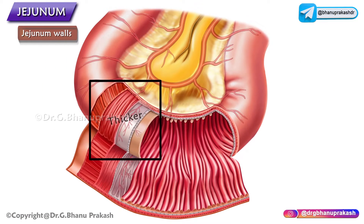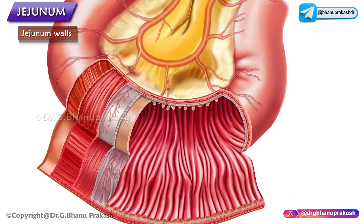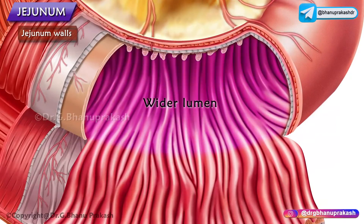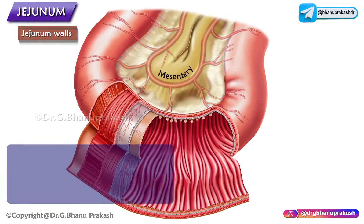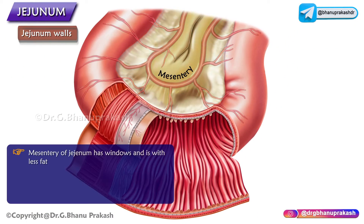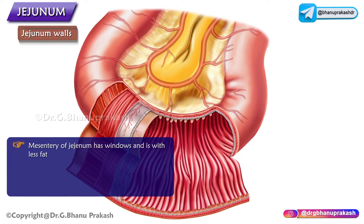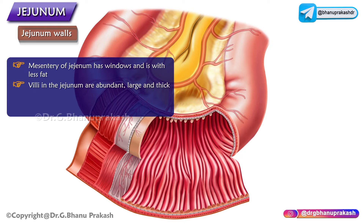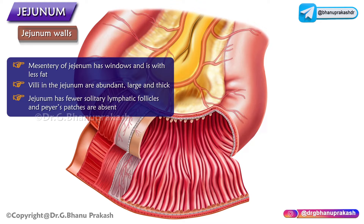Its walls are thicker and more vascular with a wider lumen. The mesentery of the jejunum has windows with less fat, and the villi of the jejunum are abundant, large, and thick. The jejunum has very few solitary lymphatic follicles, and Peyer's patches are absent.